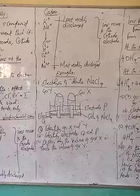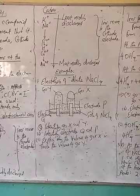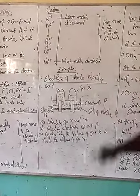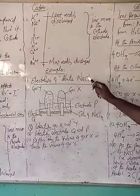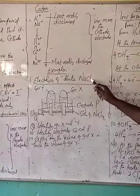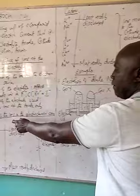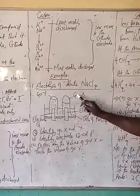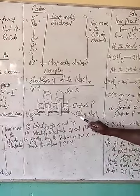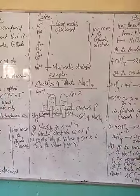Let us look at the examples. Number one: the electrolysis of dilute sodium chloride. If you consider the electrolysis of this solution, it is dilute, which means that the chloride ions will not be so many. We will only look at the first factor — the position of the ion in the electrochemical series. You may be given a diagram to identify gas X and gas Y, identify the electrodes Q and P, and explain why the volume of gas X is twice the volume of gas Y.